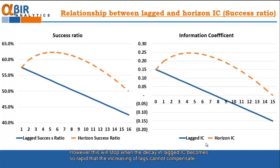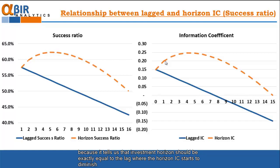However, this will stop when the decay in the lagged IC becomes so rapidly that the increase in lags cannot compensate. This is very important when managing active portfolios because it tells us that the investment horizon should be exactly equal to the lag where the horizon IC starts to diminish.